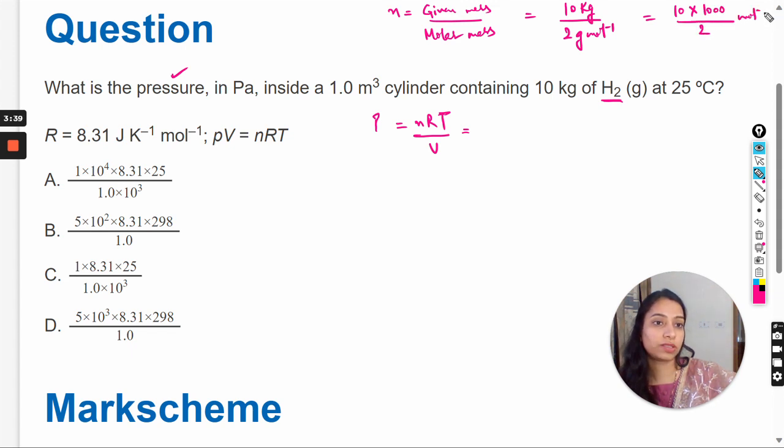So now units are mole, and now we will put this value here: 10 multiply 1000 divide by 2. Next is R gas constant, that is 8.31, and on the right side we will write the units.